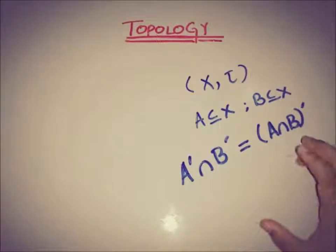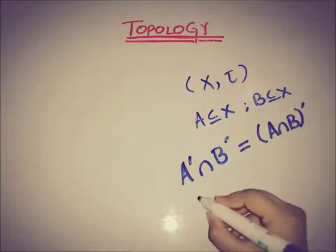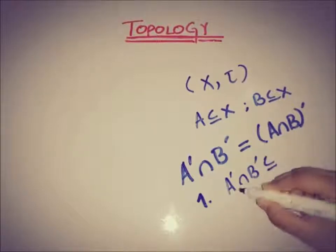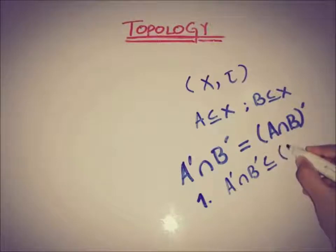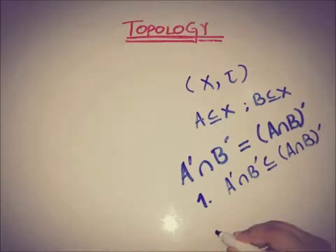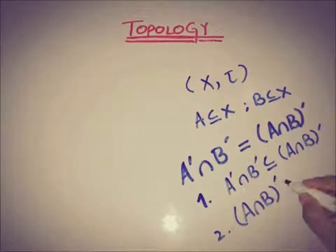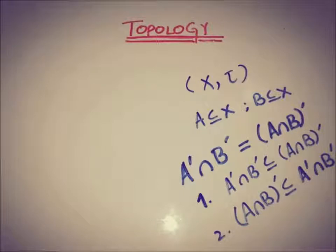This is the theorem that we have to prove, and we know that we have to prove it in two parts. The first part is to prove that A' ∩ B' is a subset of (A ∩ B)', and the second part is that (A ∩ B)' is a subset of A' ∩ B'. Let's start the proof with the first part.